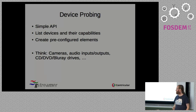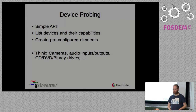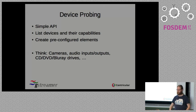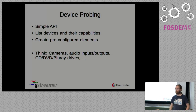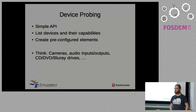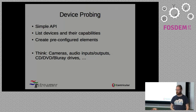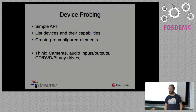One thing that was added — and many people needed — is a device probing API. Say you have an application and want to use a camera; you want to know what cameras are available. We have a simple API that gives you information about all the cameras and their capabilities. You can just tell it to give you an element for a specific camera in some configuration and then use it — you don't have to know about Video4Linux or any other API. The same thing can be used for audio inputs, outputs, CD, DVD, Blu-ray drives, and anything that is a device.